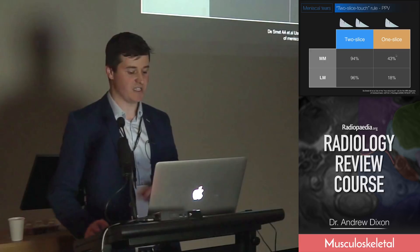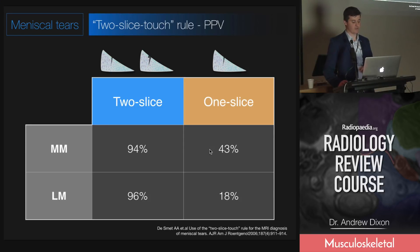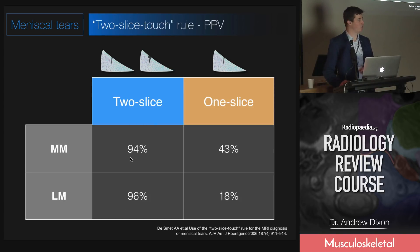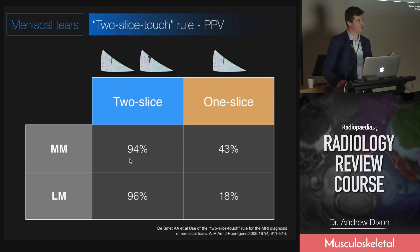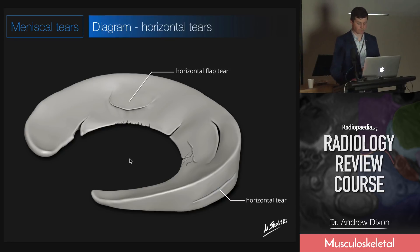If you just see it on one slice, the positive predictive value for medial meniscus is about 40%, and for lateral meniscus it's terrible — only 18% that they're going to have a tear. Whereas if you've got two slices, it's almost guaranteed that the patient will have a tear at arthroscopy. So use that two-slice touch rule for meniscal tears.